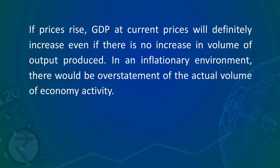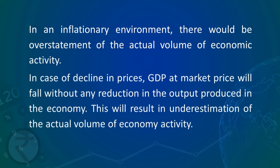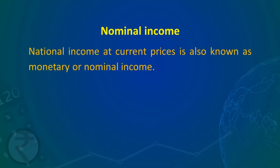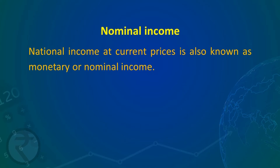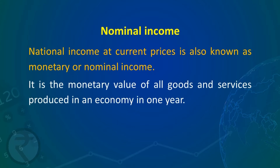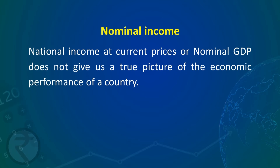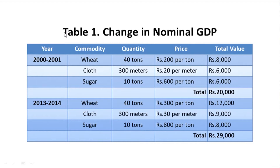In an inflationary environment, there will be overstatement of the actual volume of economic activity. In case of decline in prices, GDP at market prices will fall without any reduction in the output produced in the economy, resulting in underestimation of the actual volume of economic activity. Nominal income is the national income at current prices — the monetary value of all goods and services produced in an economy in one year. National income at current prices or nominal GDP does not give us a true picture of the economic performance of a country. Table 1 shows the change in nominal GDP.